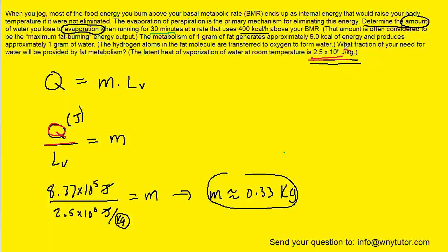There is a second question sort of buried in here, and it asks, what fraction of your need for water will be provided by fat metabolism? And then the question noted that the metabolism of 1 gram of fat generates approximately 9 kilocalories of energy and produces approximately 1 gram of water.